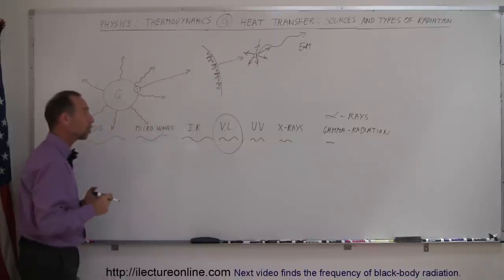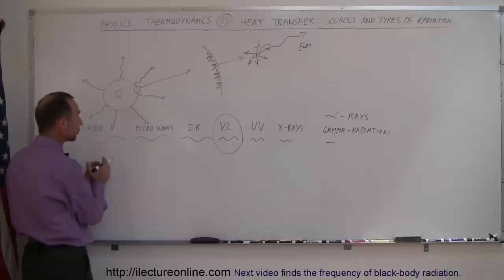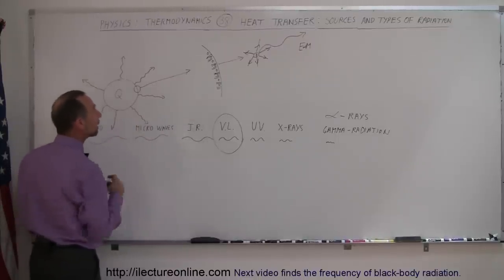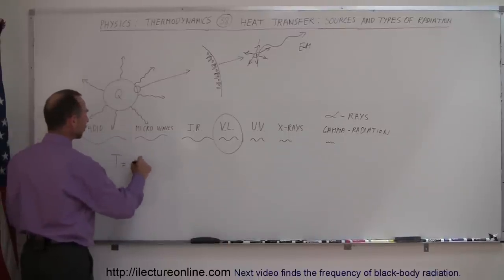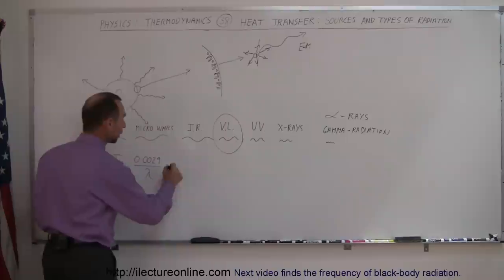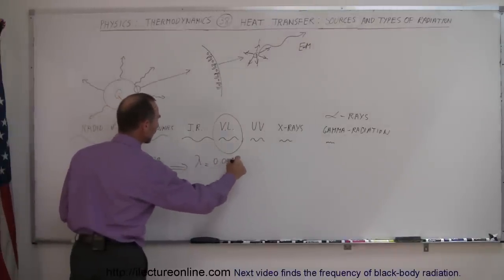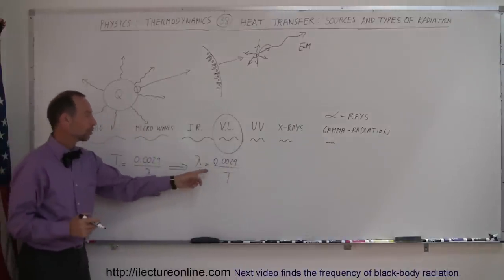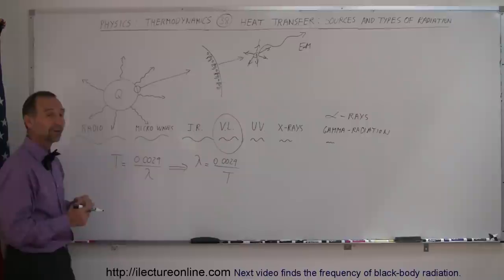For that we have an equation called Wien's Law. Wien is the physicist who determined the relationship between the temperature of an object and the wavelength — and therefore also the frequency — of the radiation it emits. Wien's Law states that temperature equals 0.0029 divided by the wavelength, or equivalently, the wavelength equals 0.0029 divided by the temperature. Knowing the temperature, you can find the wavelength, and vice versa.